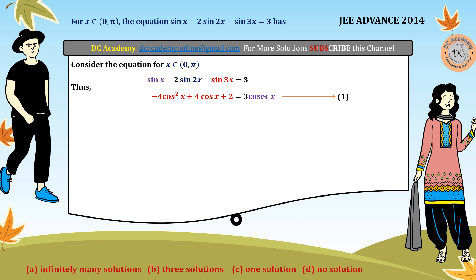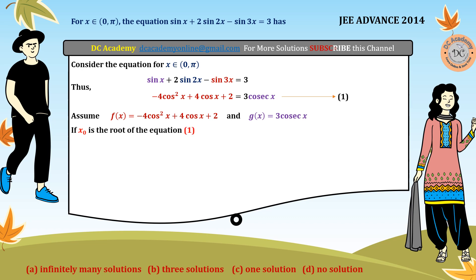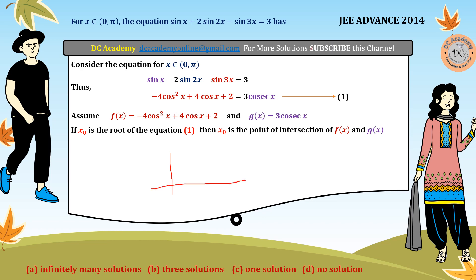We define f(x) as the left-hand side function and g(x) = 3/sin x as the right-hand side function. A key conceptual understanding: if x₀ is a root of the equation, then x₀ must be a point of intersection of the graphs of f(x) and g(x). This is the graphical method for solving equations. Let's draw the x-axis and y-axis and sketch both curves.